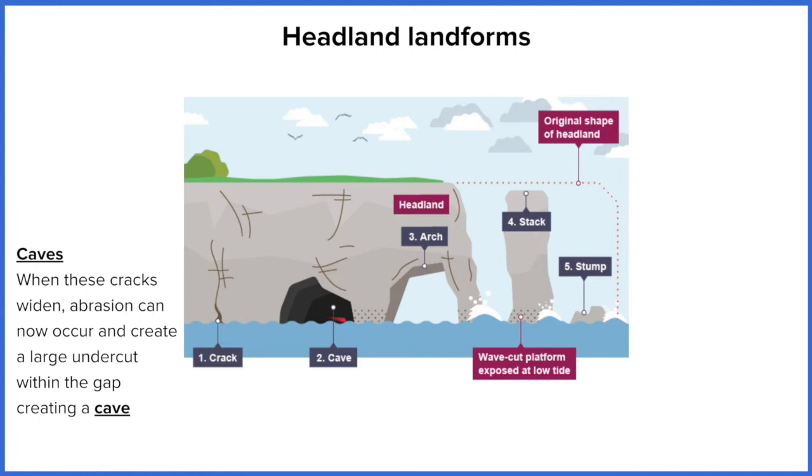However, erosion will also be working on both sides of that headland. So the side we can see, waves are going to come down and collide at the side, but it will also be happening at the other side. So when two caves meet and go all the way through, we end up with this. So this is an arch.